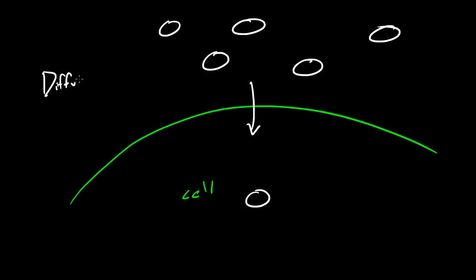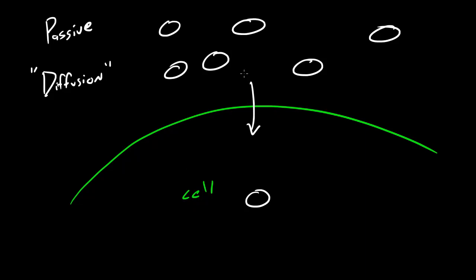This process is called diffusion — a natural process — and remember it's passive. So as you can see, the cell isn't doing anything; it isn't burning any calories or converting any food to energy to make this happen. This is a natural process of the movement of molecules from areas of high concentration — there are a lot of oxygen molecules out here — to low concentration. High concentration means a lot of molecules; low means not that many molecules. That's what diffusion is, and this is how particles move across the cell membrane when we're talking about diffusion.